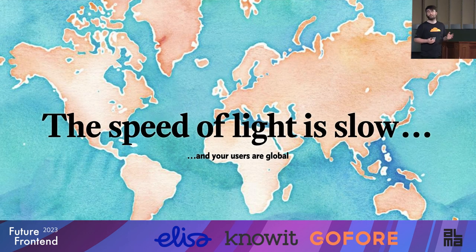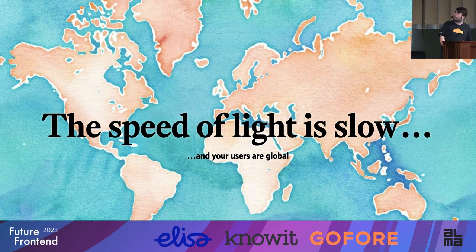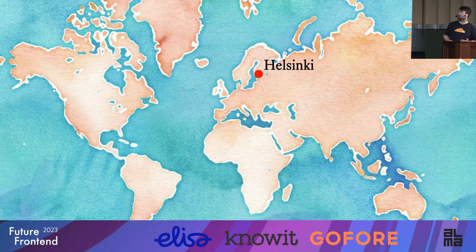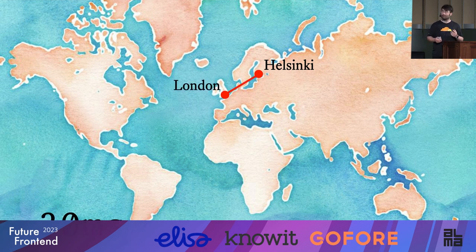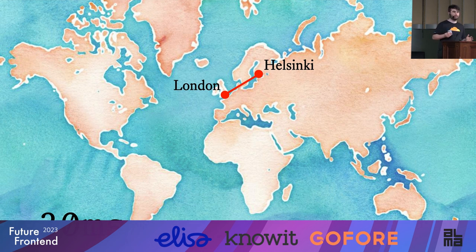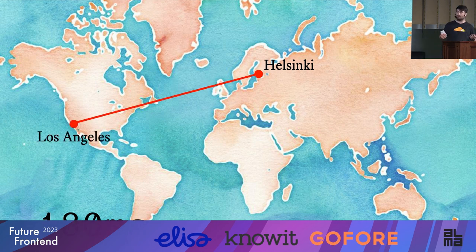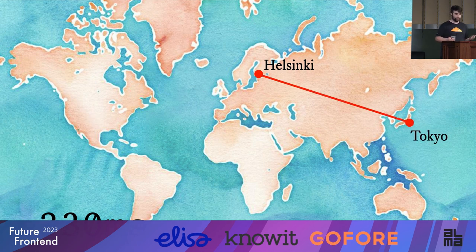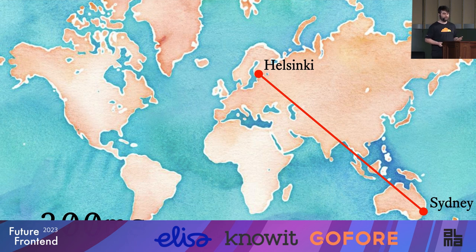Edge computing is really designed to solve the problem of the speed of light being slow. And the speed of light is slow, and your users are global. Obviously the speed of light is relatively fast, but when you're talking about global scales you really have a problem. If you have servers in Helsinki and your users are in London, you're looking at about a 30 millisecond ping time — raw network latency, not including Wi-Fi. But as soon as you go further afield: Los Angeles, 180 milliseconds; Tokyo, even worse; Sydney and anywhere in Australia, 300 to 400 milliseconds ping time from a server in Helsinki, which isn't ideal.